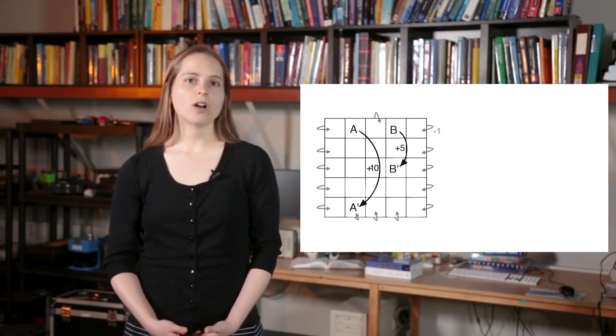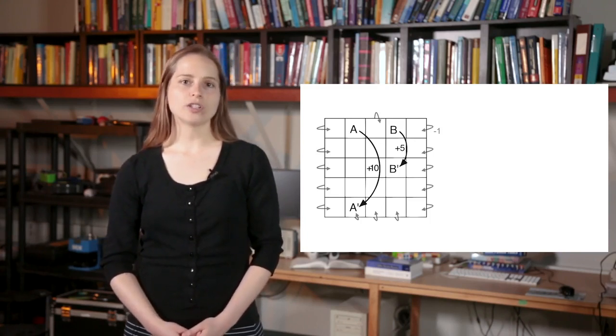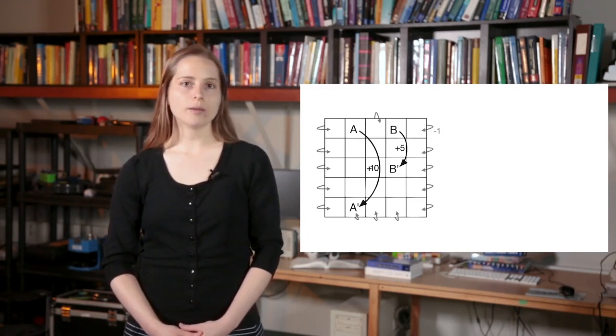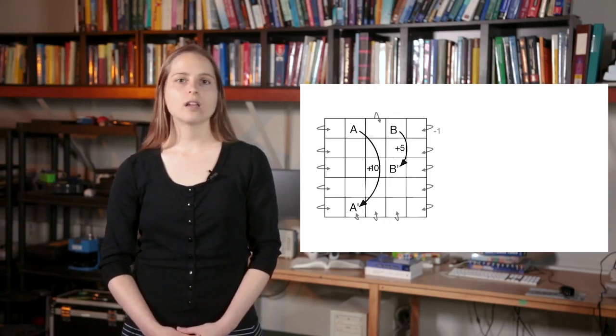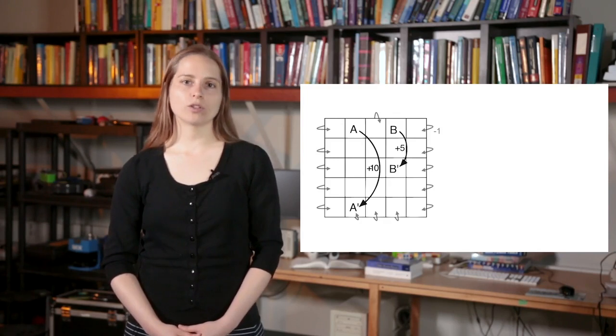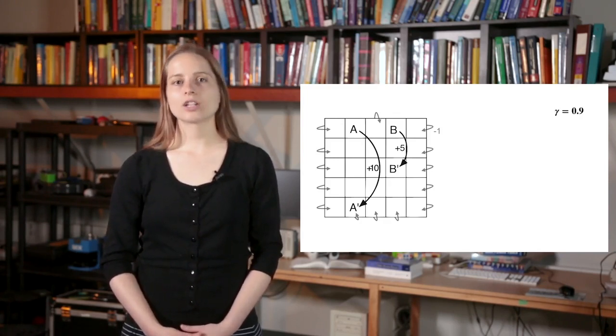As before, all actions in state A transition to state A' with a reward of plus 10. In state B, all actions transition to B' with a reward of plus 5. The reward is 0 everywhere else, except for minus 1 for bumping into the walls. The discount factor is 0.9.